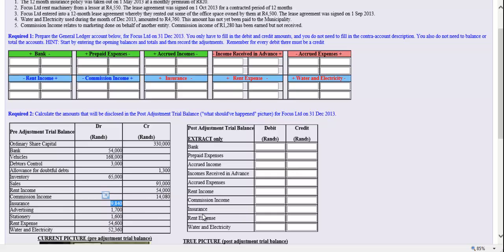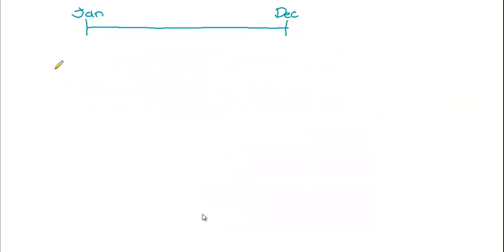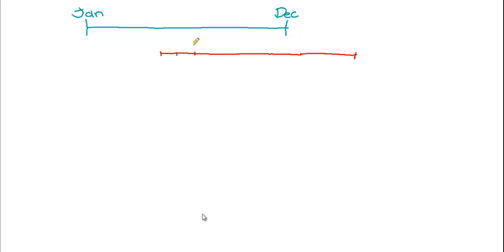Going back to our picture, the current picture is as follows: we have recorded insurance from the 1st of May. This is where we would have had our 12 months — that's the period we recorded the insurance paid. This 12-month period started in May, and since it started on the 1st of May, it's going to end next year on the 30th of April.